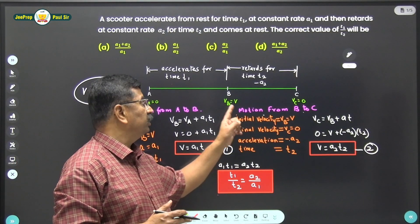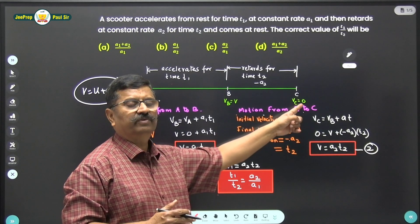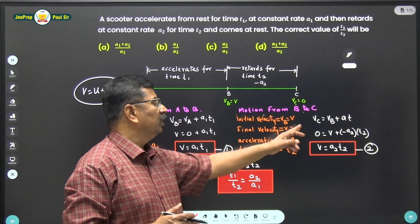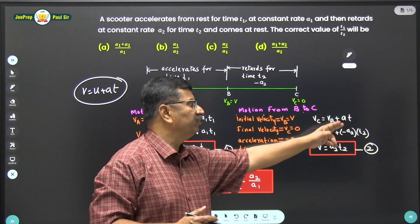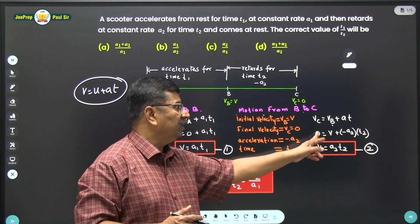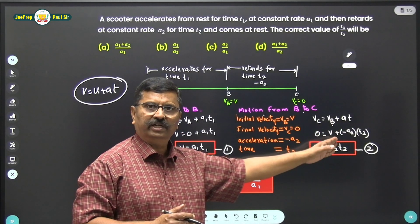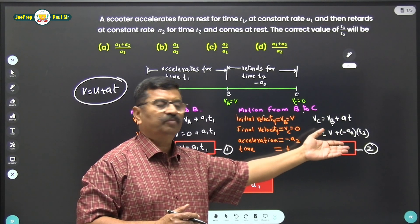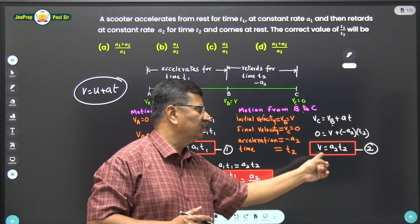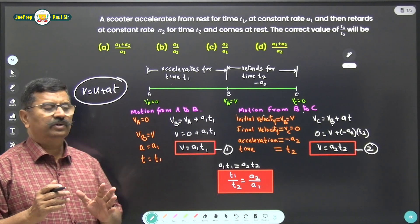Therefore, here initial velocity is the velocity at point B, that is v. Final velocity vc is equal to 0. Therefore, vc is equal to vb plus at. Final velocity is equal to initial velocity plus a into t. Final velocity is 0. Initial velocity is the velocity at point B, that is v, plus in bracket minus a2 into t2. So I get another expression for v as a2 t2.